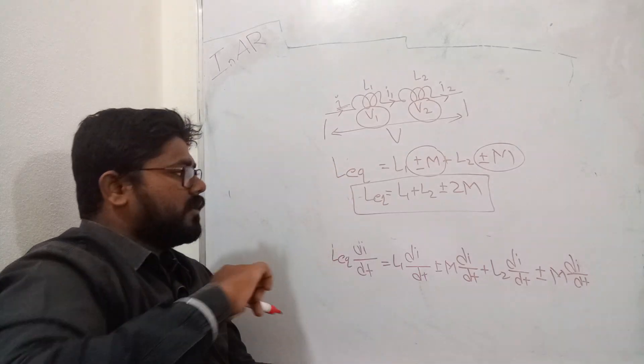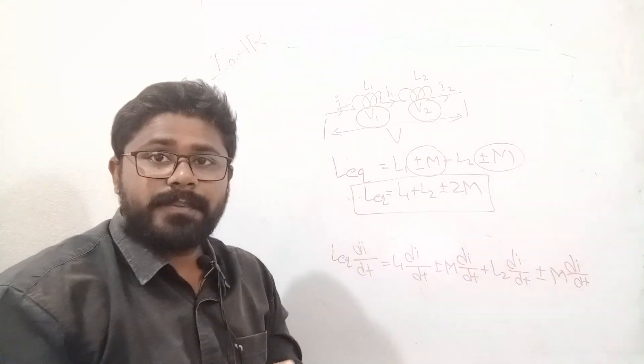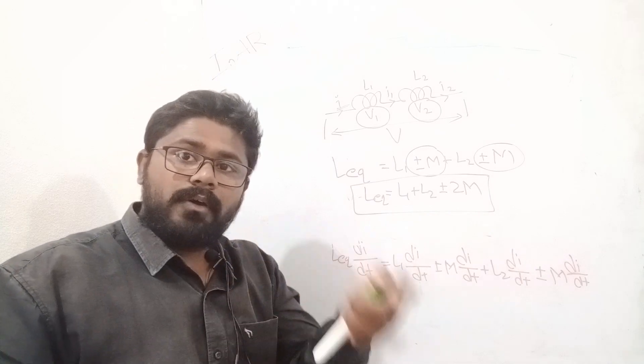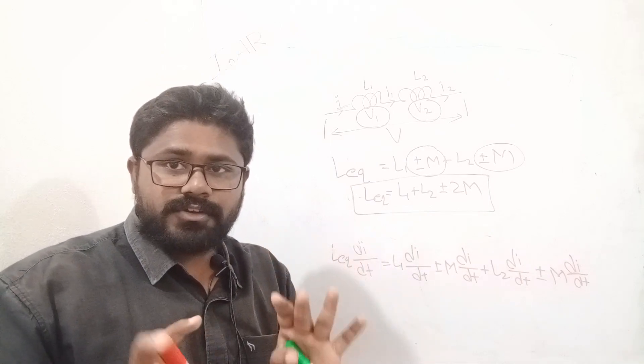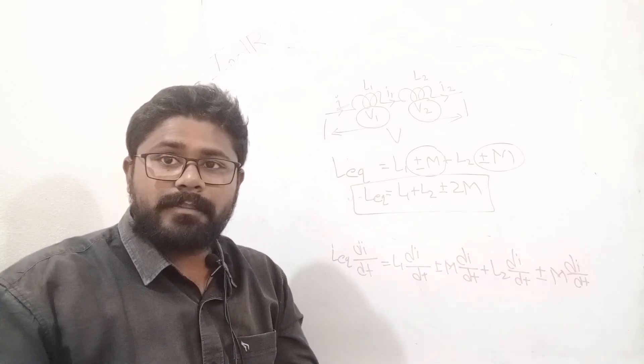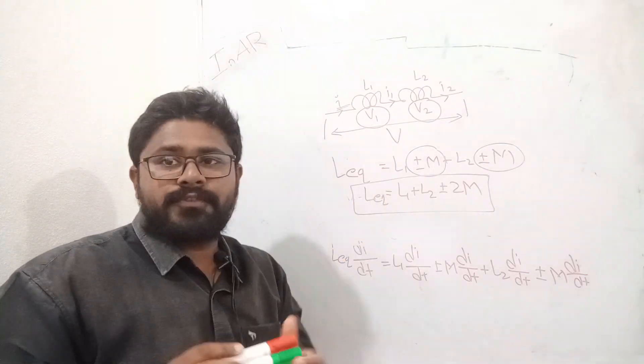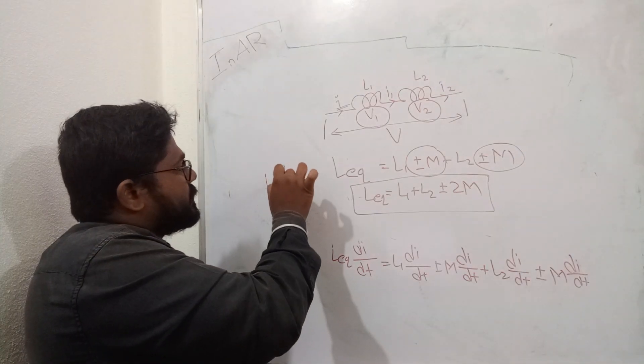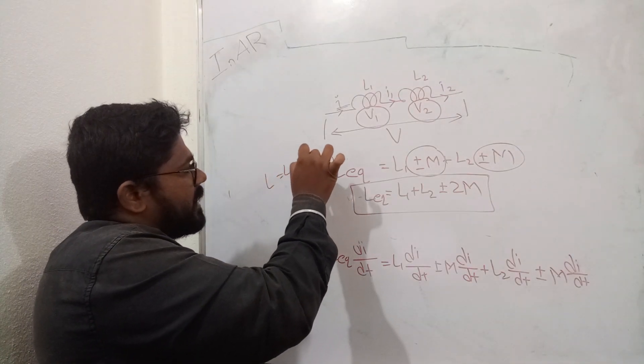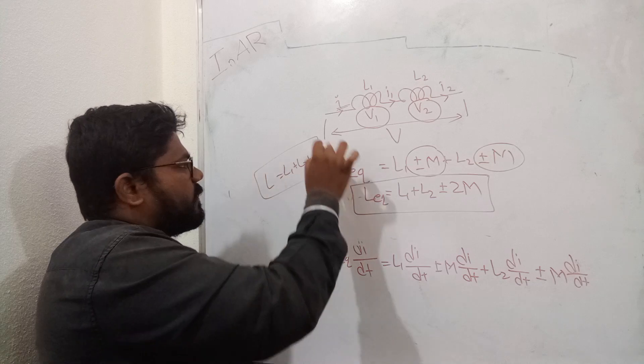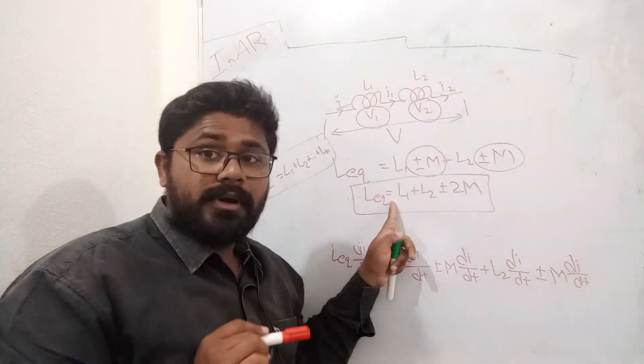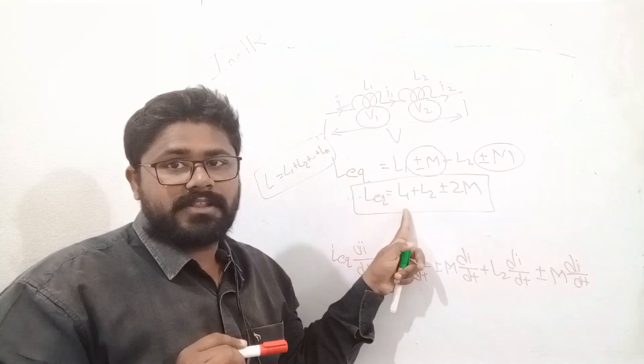This is the final formula for equivalent inductance of two coupled coils. This is the series connection of inductors. We should call them as coupled coils. Coupled coils ki equivalent inductance formula idhi. Two inductors connected in series ki formula L equals L1 plus L2. That is any inductor lo.